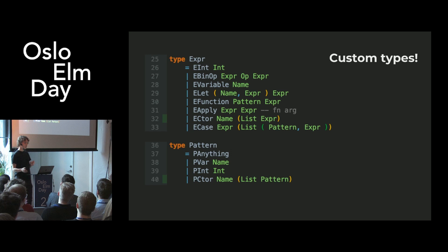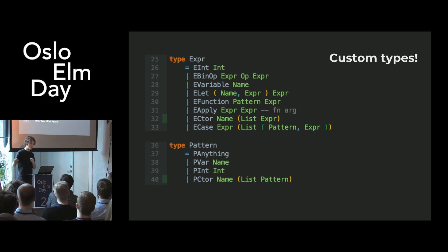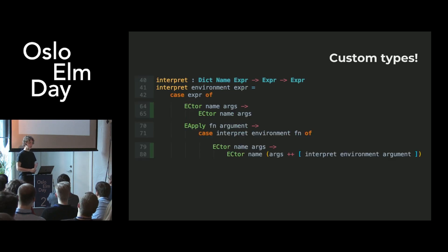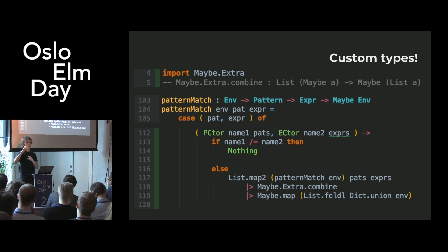Next up: custom types. Custom types mostly live in the type system. At runtime, we only need a way to tell the different constructors apart — I'm using the name of the constructor — and they can have a list of arguments. We don't have to care about the number of arguments because that's handled by the type checker. When we do a function call on a constructor, we just store away the argument. When we pattern match on a custom type, we check that the names line up, then pairwise check each pattern against the expression.